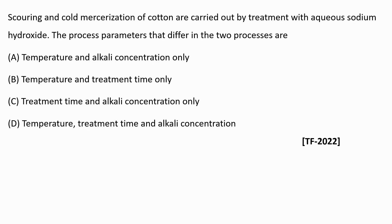Next question: scouring and cold mercerization of cotton are both carried out by treatment with aqueous sodium hydroxide. The process parameters that differ in the two processes are? Sodium hydroxide is used as an alkali in both, but concentration differs. Depending on the functions of each process, the concentration, temperature, and time all vary. Option D is the right answer: temperature, treatment time, and alkaline concentration all differ between scouring and cold mercerization.